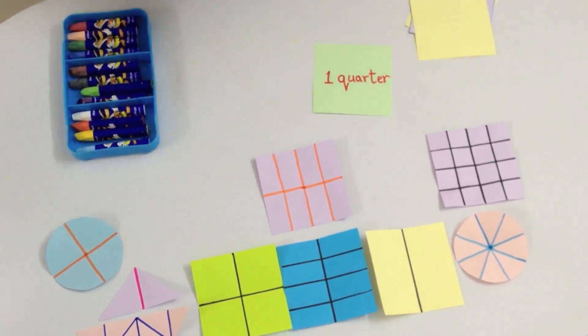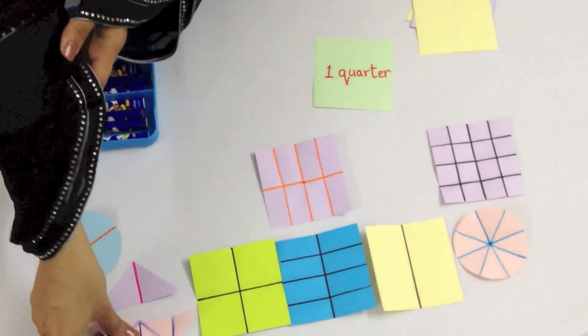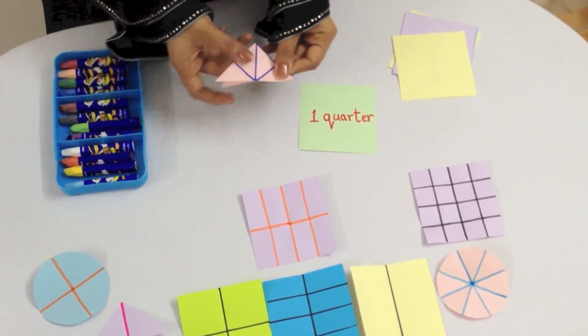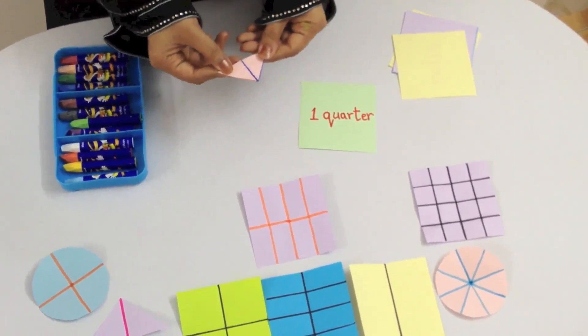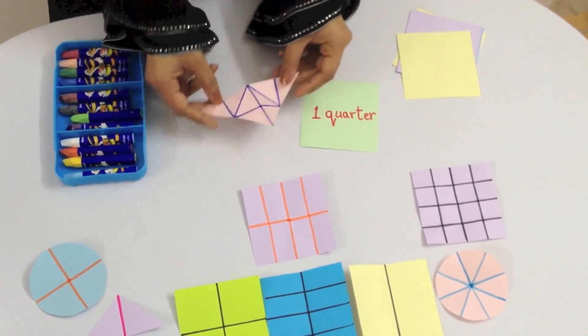This title here says one quarter. You're going to pick up a shape, and to color the quarter you will first fold it in half and then fold it again in half so we can see a quarter. This quarter has two equal parts, so we can color any two parts to show a quarter.